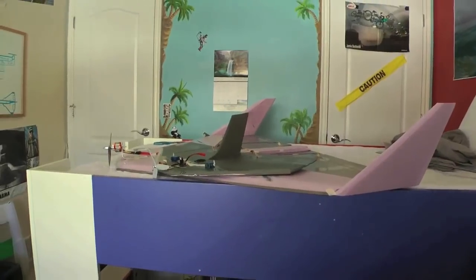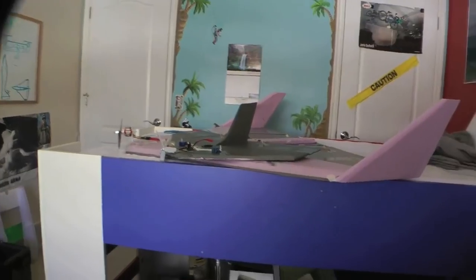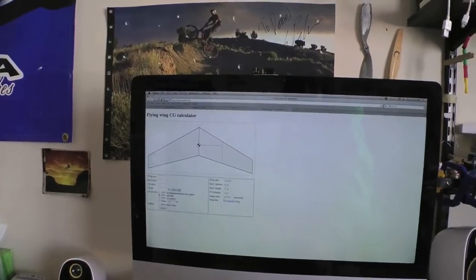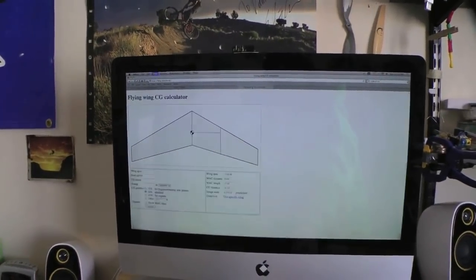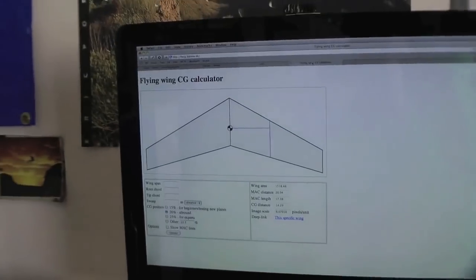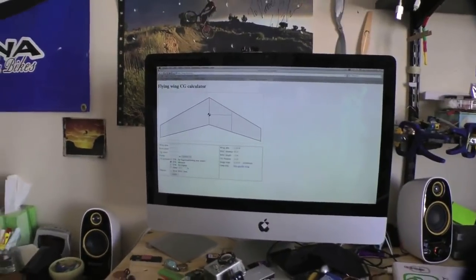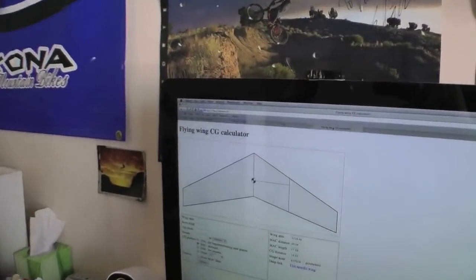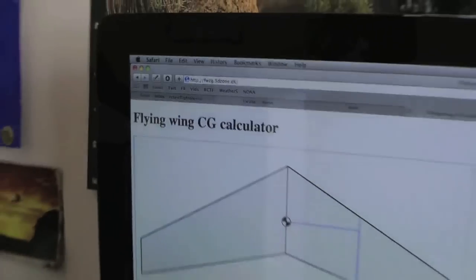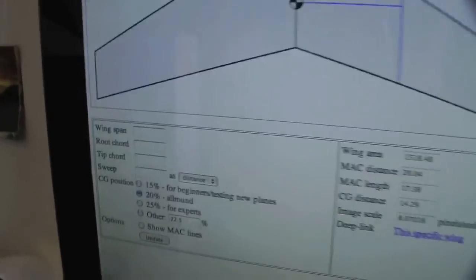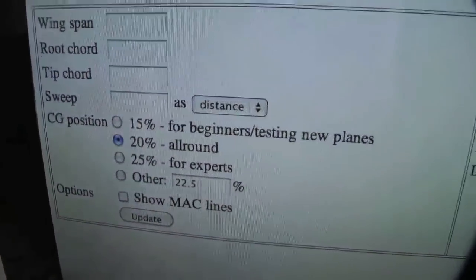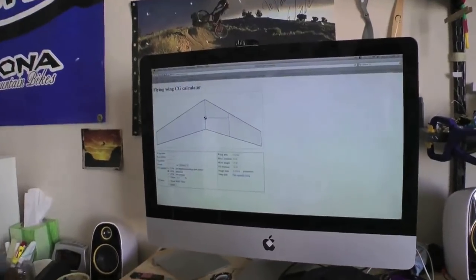So basically now we're going to talk about how to find the CG for a delta wing. So there are quite a few ways to find the CG for a delta wing. But the first we're going to talk about is a flying wing center of gravity calculator. Now this is a pretty easy way, but it doesn't always work out perfectly, but it kind of can give you an idea of where the CG is. So you can basically Google flying wing CG calculator and it'll take you to a few. We're going to do this now.